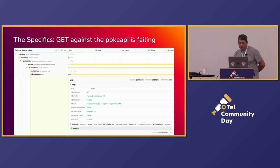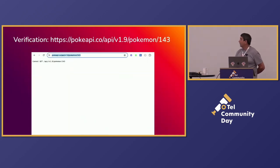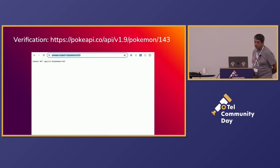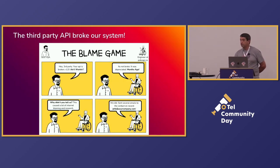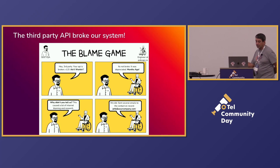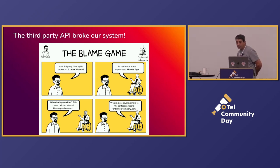So since this is a GET, let's just drop it in our browser and take a look. And sure enough, this API endpoint's not working. So obviously, it's our third-party vendor that's to blame. We reach out to the third-party vendor, and they say: hey, it's not broke — it was deprecated months ago.